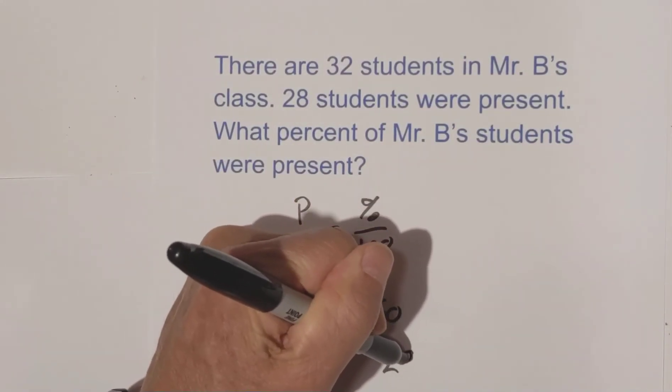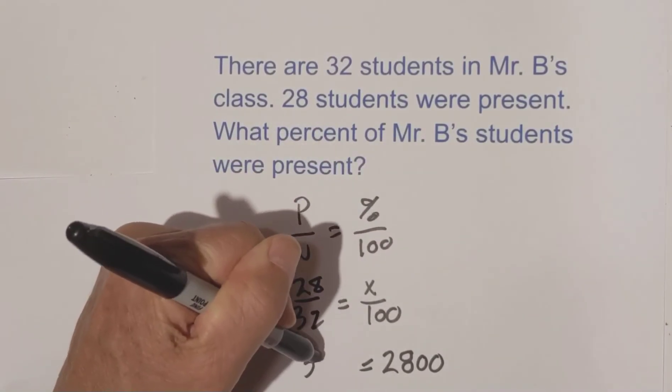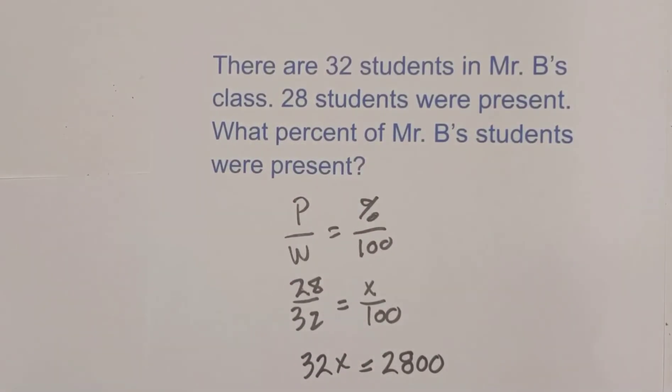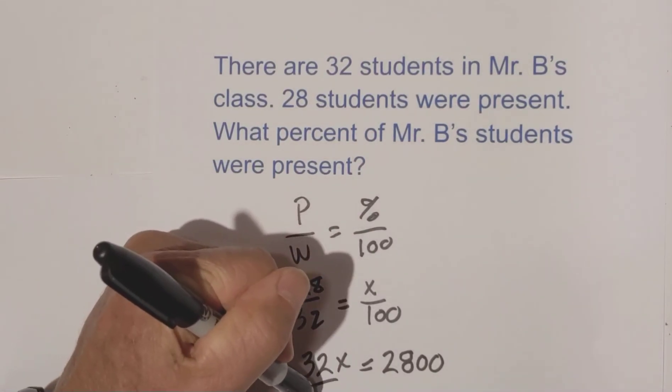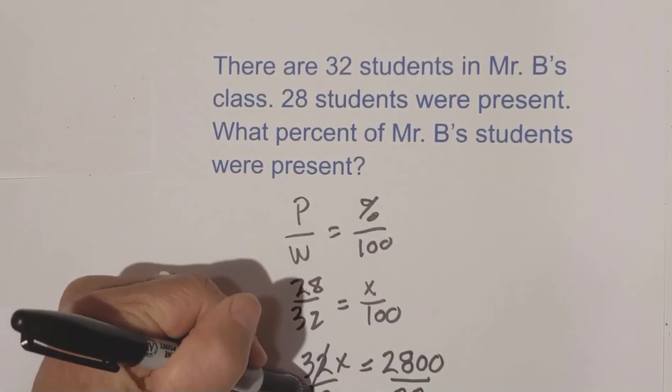28 times 100 is 2800 and that equals to 32x. Okay, now let's divide both sides by 32. Okay, these cancel.